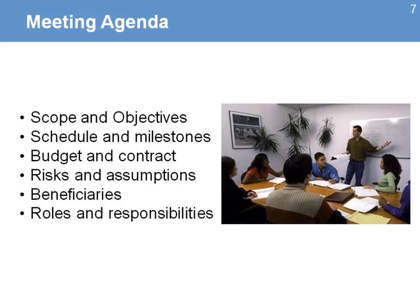For your agenda, you will start by presenting the scope and objectives of the project — why we have the project and what we're trying to solve. You will also present information on the schedule and milestones, budget and contract, risks and assumptions, information on beneficiaries, and the roles and responsibilities of all the people present during the kickoff meeting.